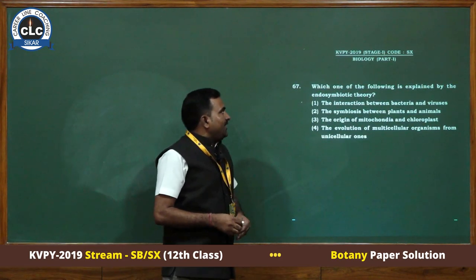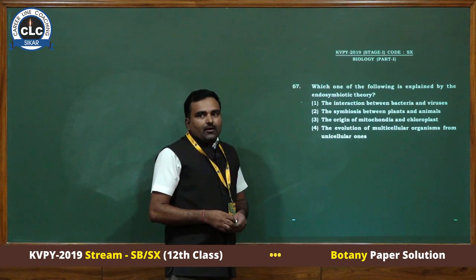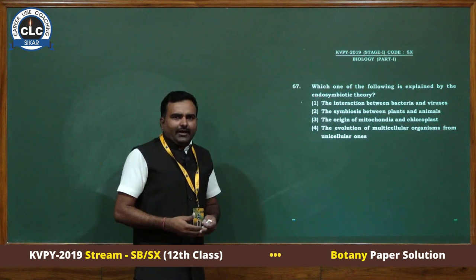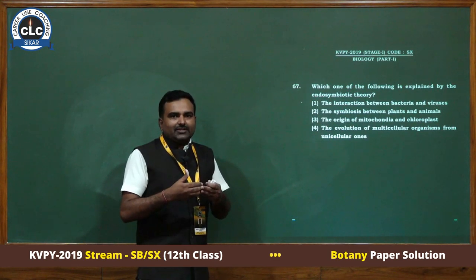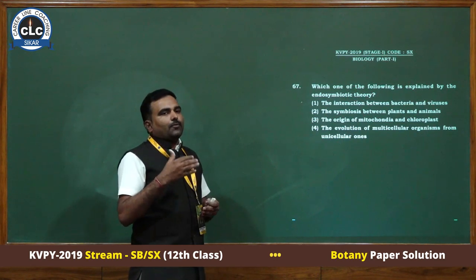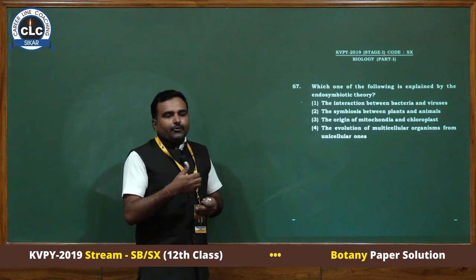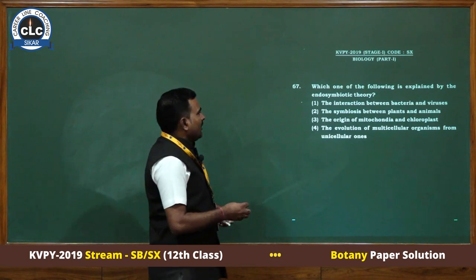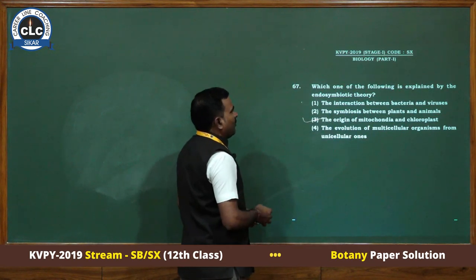Which one of the following is explained by the endosymbiotic theory? According to endosymbiotic theory, mitochondria and plastids originated from bacteria due to endosymbiosis. So the origin of mitochondria and chloroplast is explained by endosymbiotic theory. The answer is third.